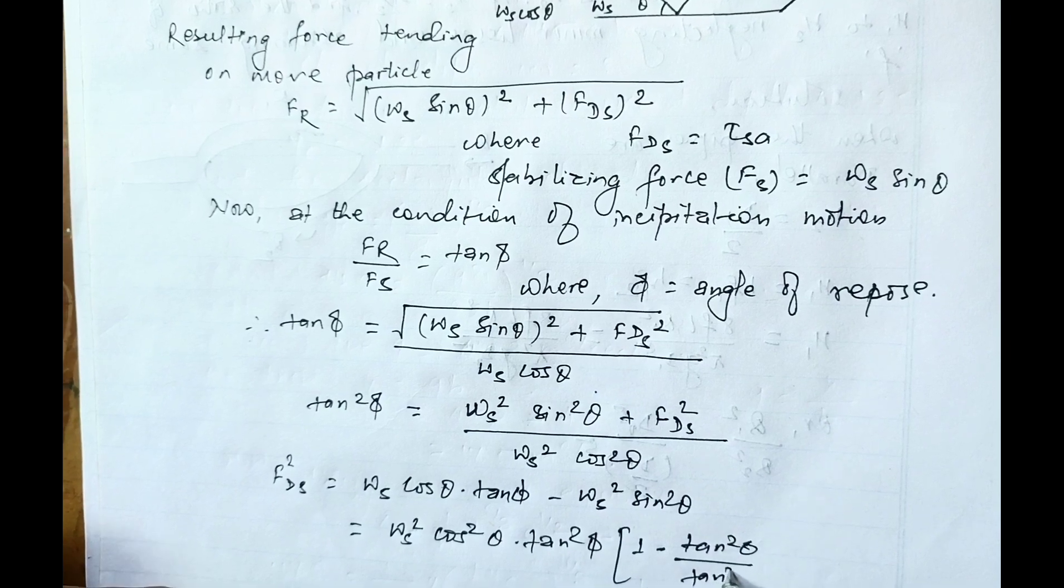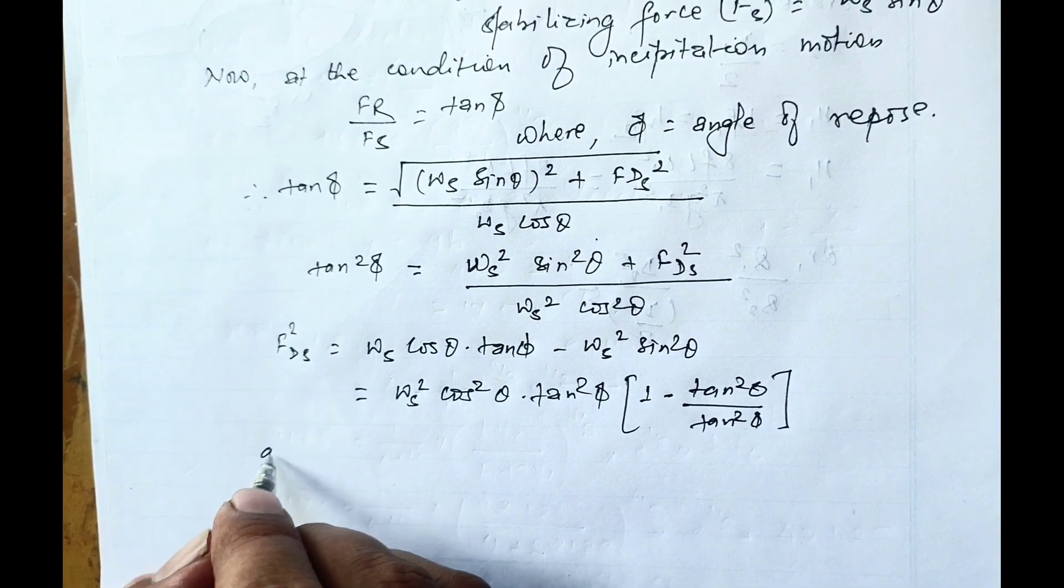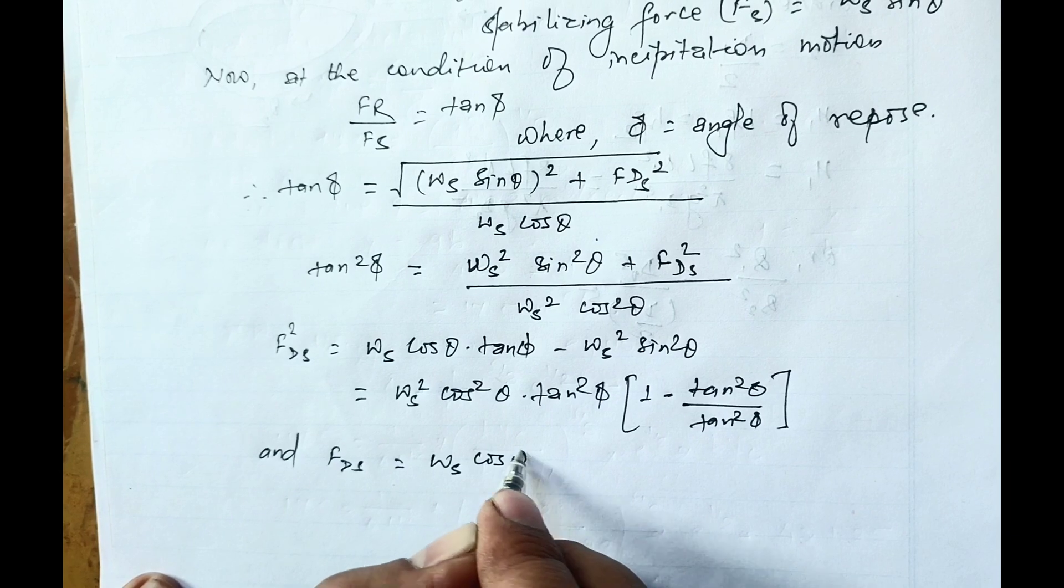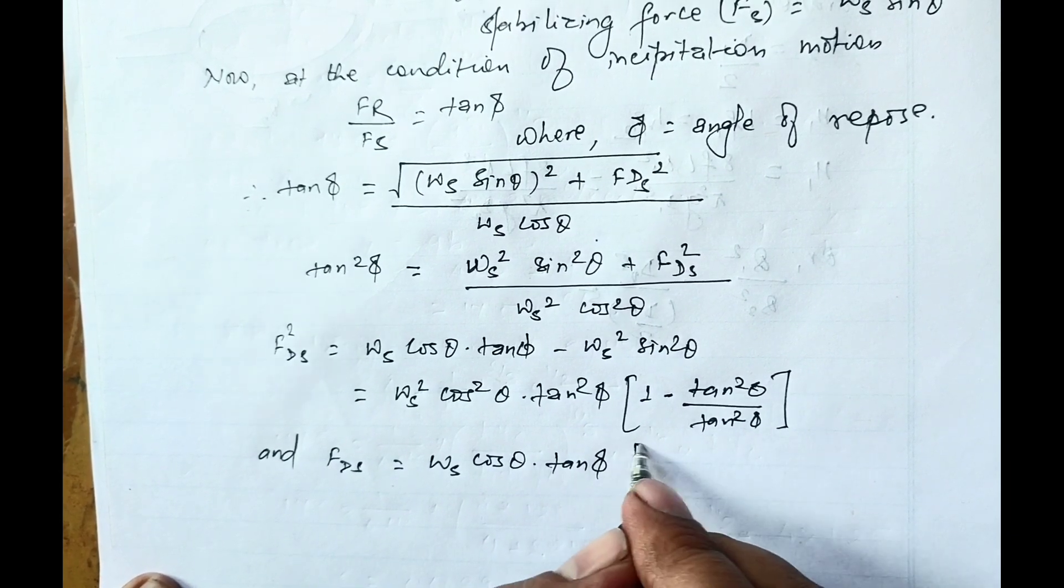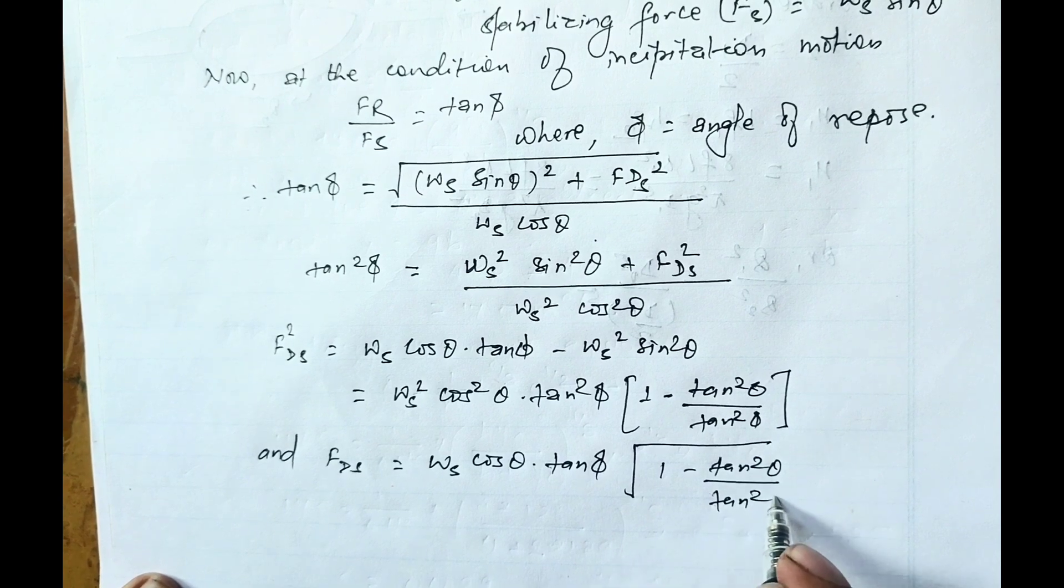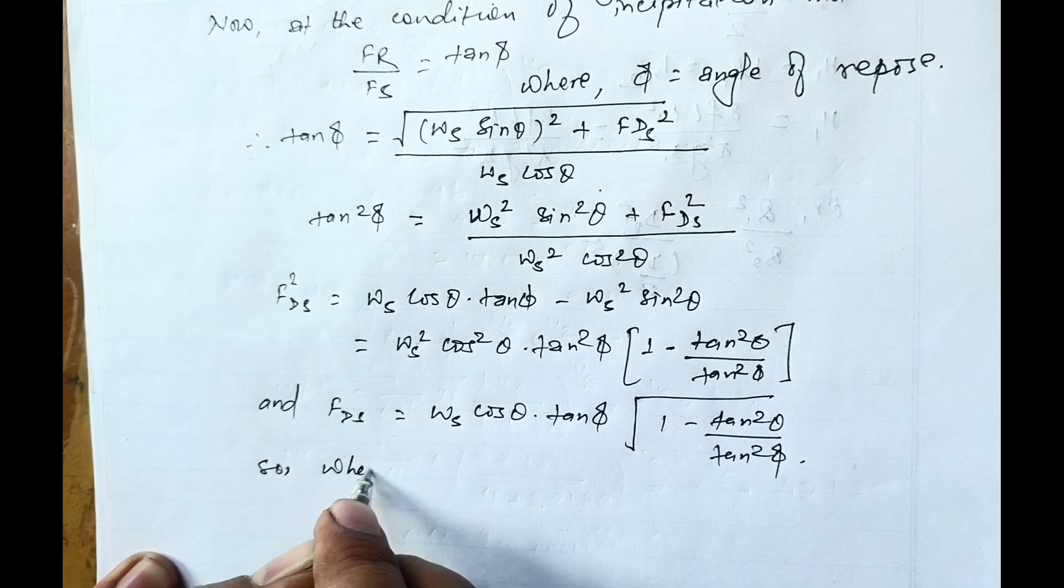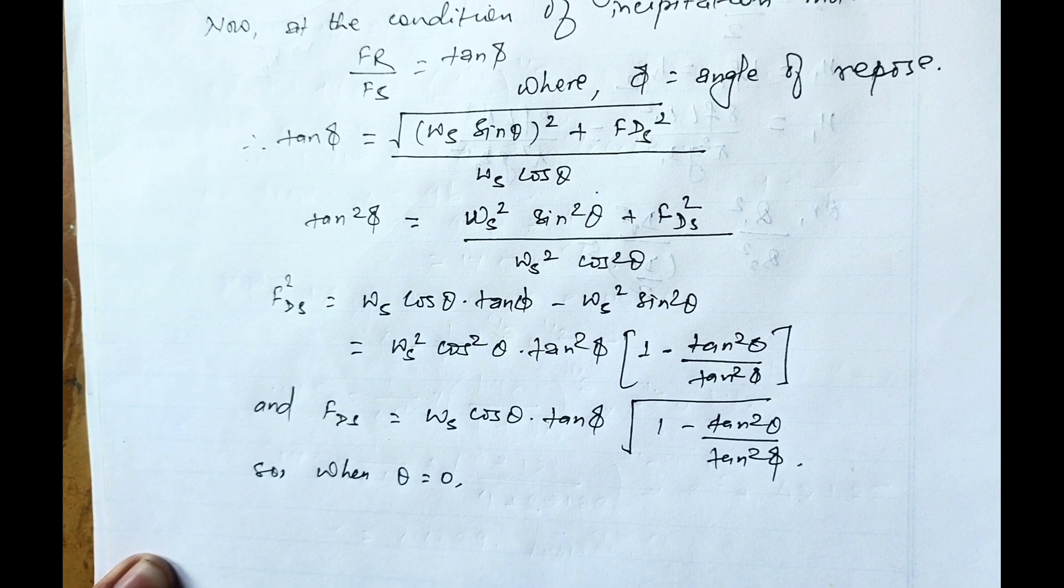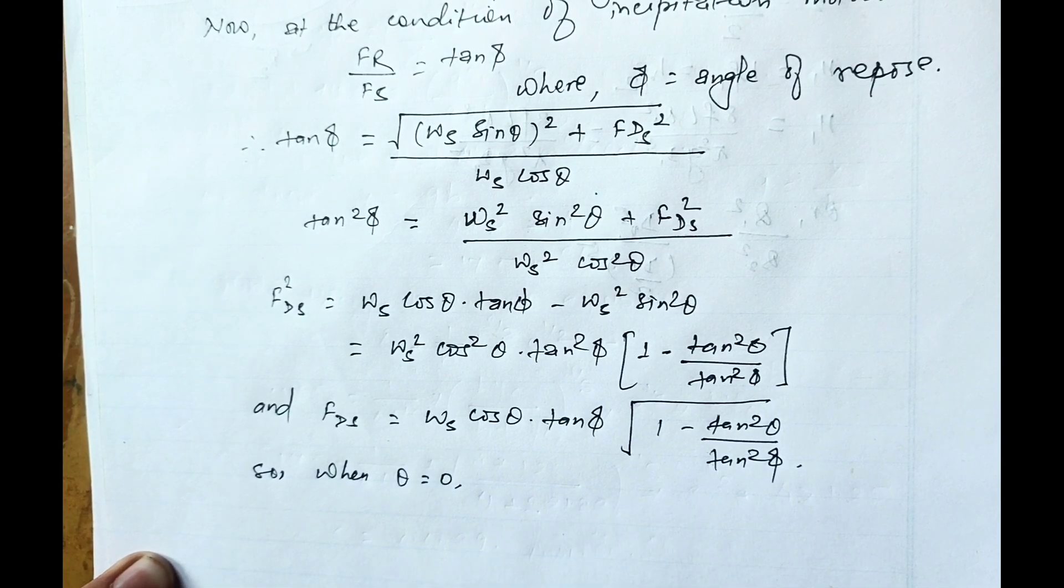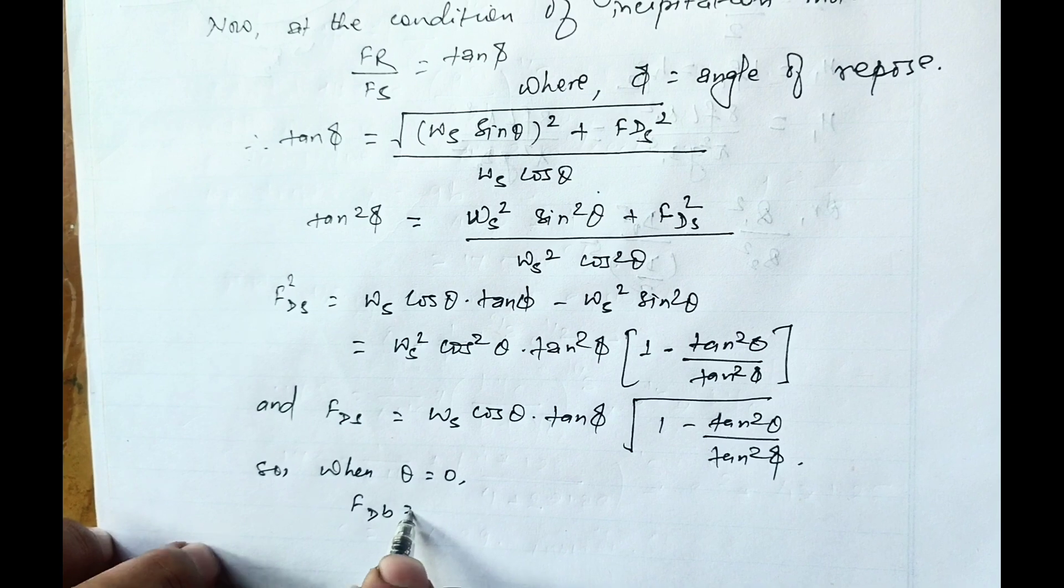And FDS equals WS cos theta dot tan phi root over one minus tan squared theta divided by tan squared phi. So when theta equals zero, drag force on particle situated on bed at time of incipitation motion is obtained by FDB equals tau B.